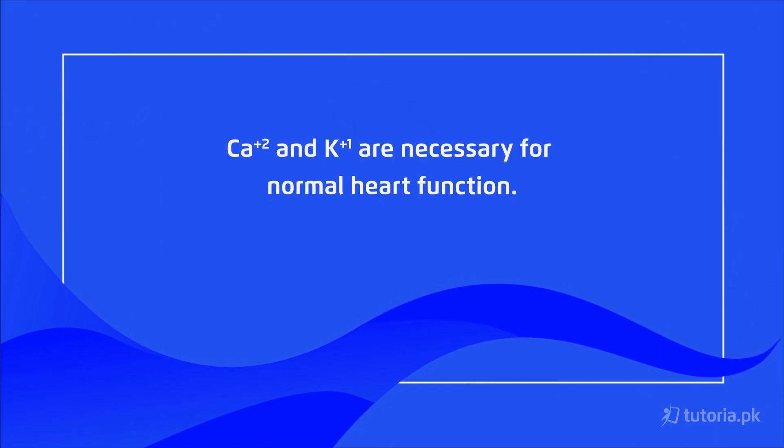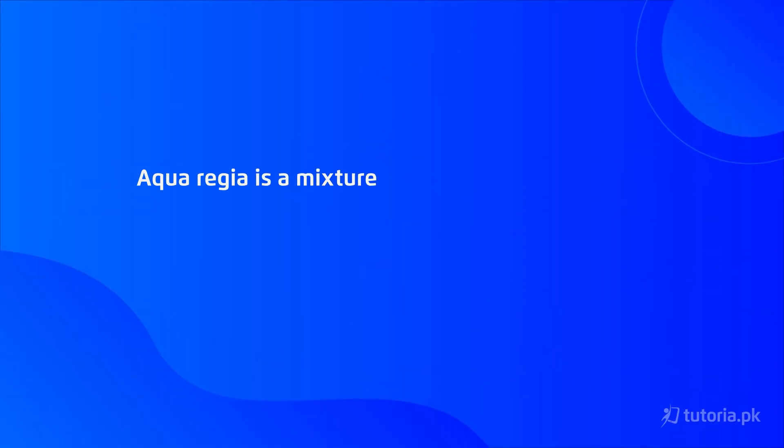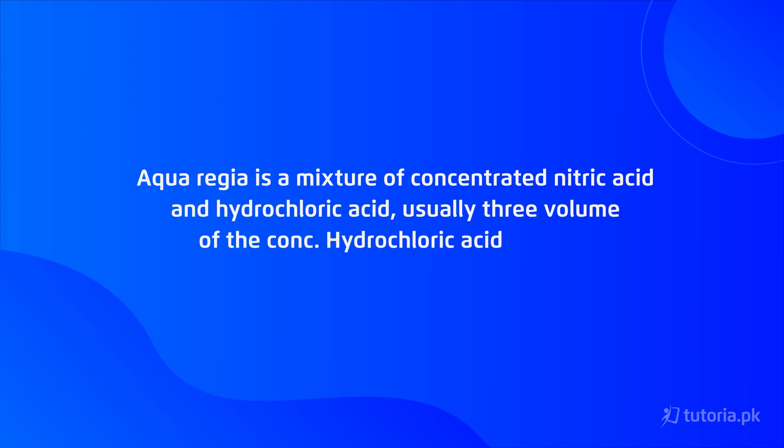Some metals are inert — meaning not very reactive — including gold, platinum, and silver. These are called noble or inert metals. Copper and silver are so inert that they only react with concentrated nitric acid and concentrated perchloric acid. Gold and platinum require aqua regia to react. Aqua regia is made from three volumes of concentrated HCl and one volume of concentrated nitric acid — this mixture is used to dissolve gold and platinum.